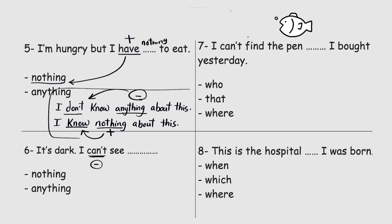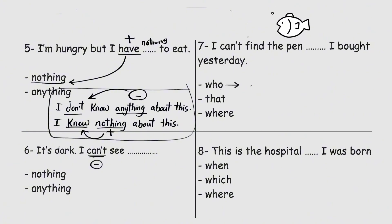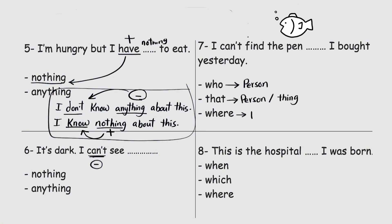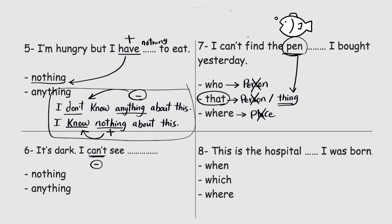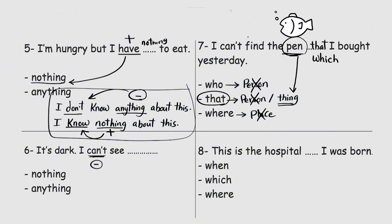You answer this one: it's dark, I can't see blank — nothing or anything? 'Can't' is negative, so follow the rule. Next: I can't find the pen blank I bought yesterday — who, that, or where? We use 'who' after a person, 'that' after a person or a thing, and 'where' after a place. The pen is not a person and not a place — it's a thing. So we use 'that': I can't find the pen that I bought yesterday. We can also use 'which' here.